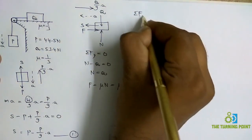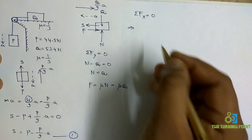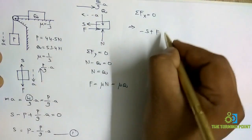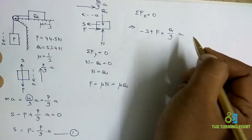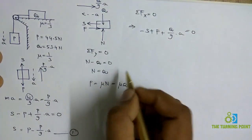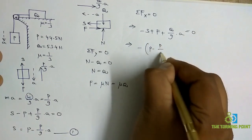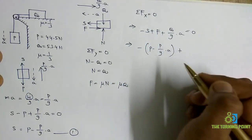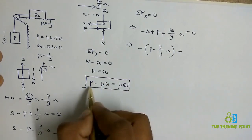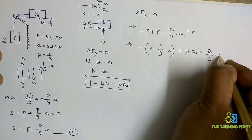Now consider sigma Fx equal to 0. Along the x direction the forces are: minus S plus F plus (Q/g)·a equals 0. Substitute the value of S from Equation 1 — which is P minus (P/g)·a — and substitute the frictional force as mu·Q.